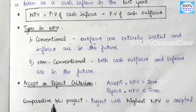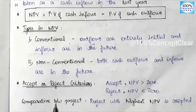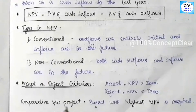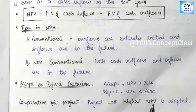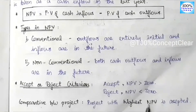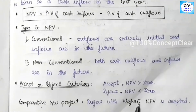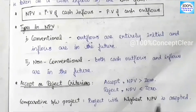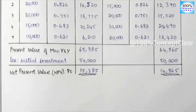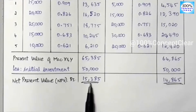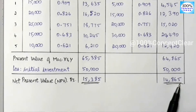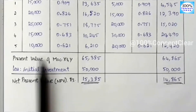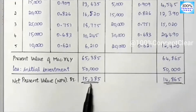We have two projects to compare. If NPV is positive, we accept the project. Both machine X and machine Y have positive NPVs — 15,385 and 14,865 respectively — so both can be accepted. However, machine X has the greater NPV value.